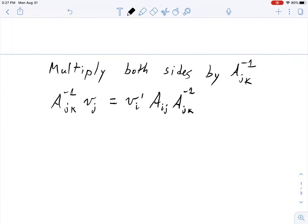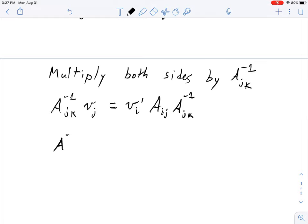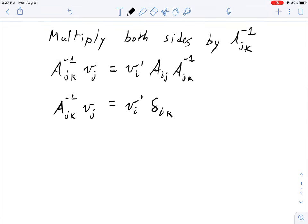So a inverse jk vj equals vi prime, and then we can combine these two here into delta ik. K is the free index, and this term here is zero whenever i is not equal to k, so this is equal to vk prime.